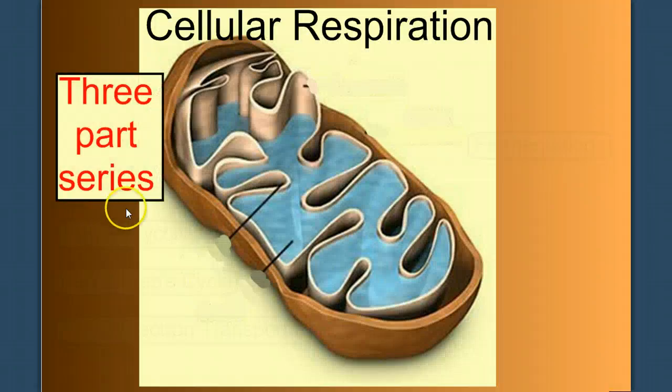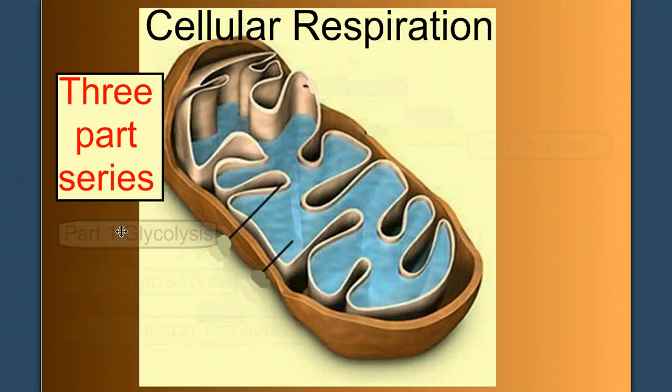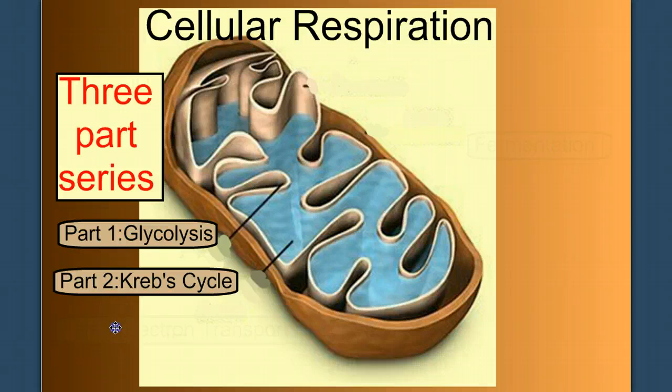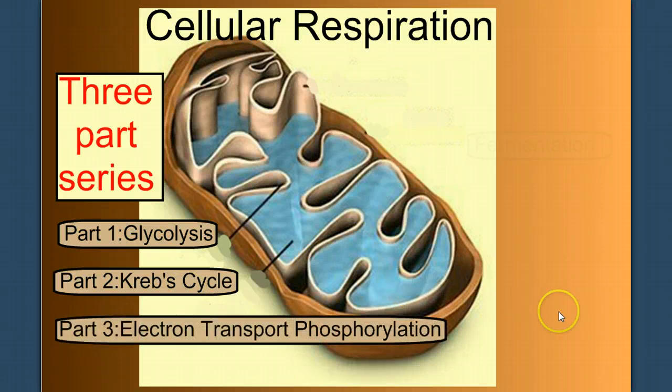I decided to make this a three-part series. In part one, we'll do an introduction to cell respiration and the details of glycolysis. That's what you're watching now. Then in part two, we'll take a closer look at the Krebs cycle. And in part three, we'll look at electron transport phosphorylation. Watch these three videos in sequence. I'll have links for these second two at the end of this video.